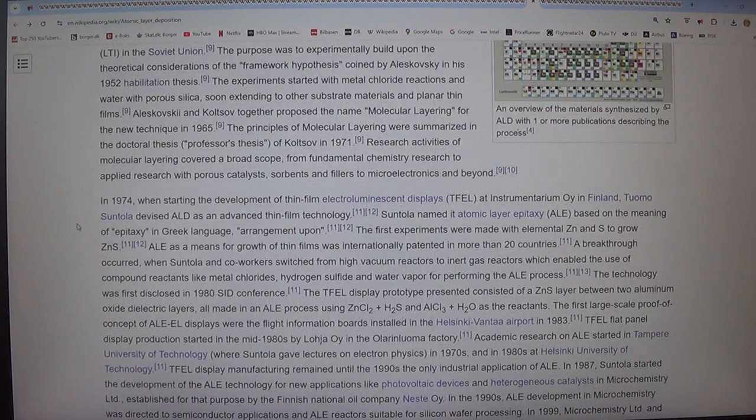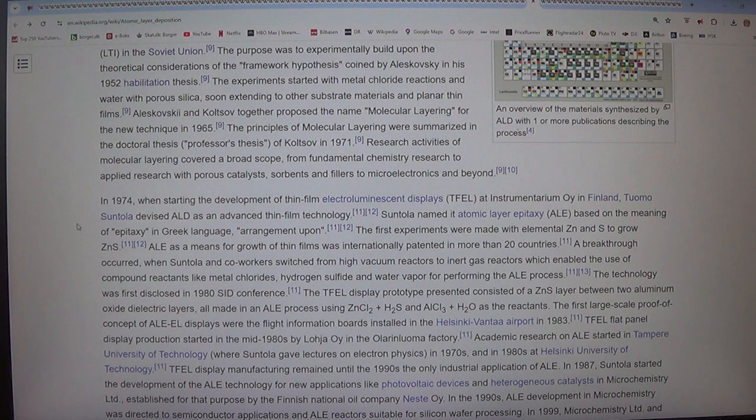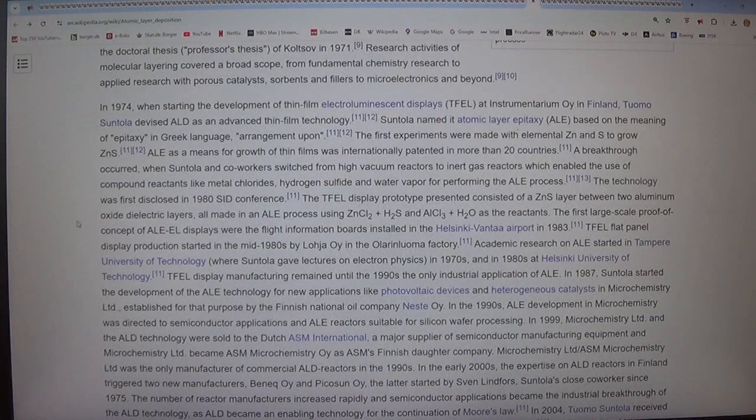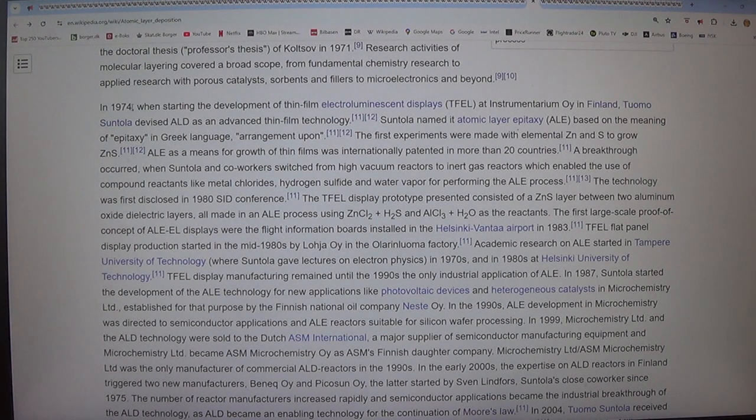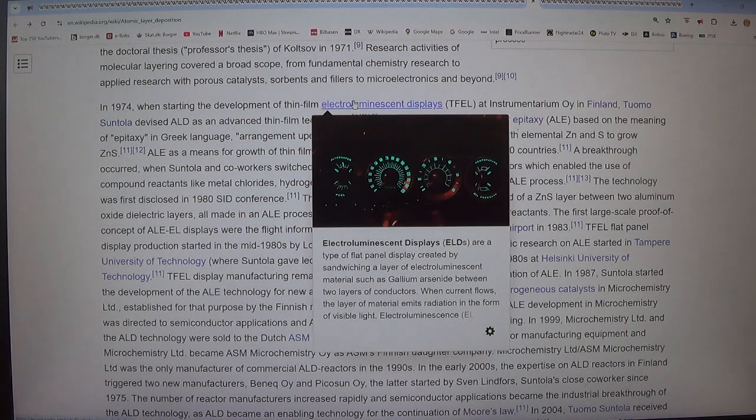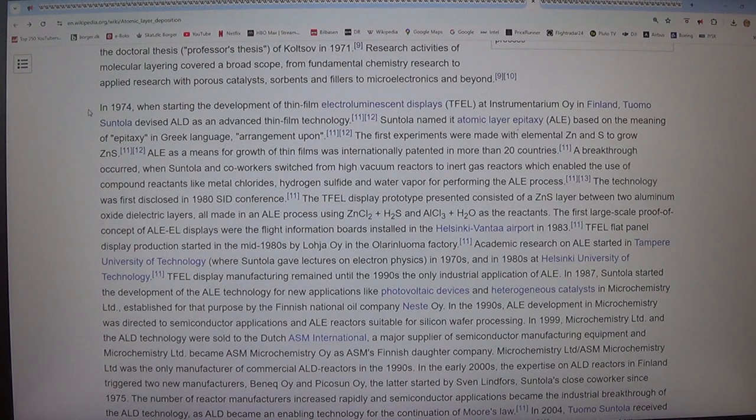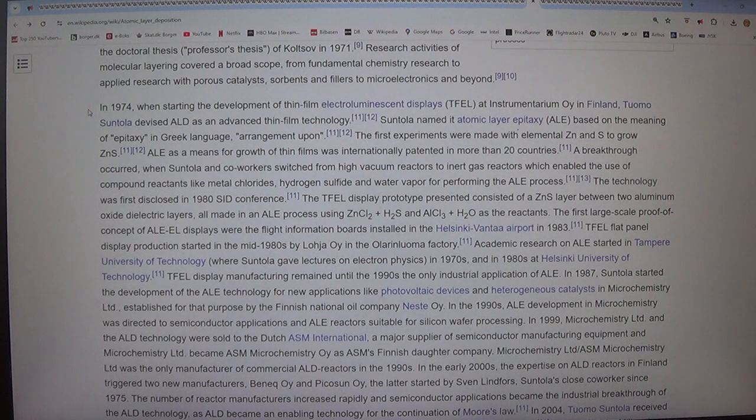Research activities of molecular layering covered a broad scope, from fundamental chemistry research to applied research with porous catalysts, sorbents and fillers to microelectronics and beyond. In 1974, when starting the development of thin film electroluminescent displays at Instrumentaria in Finland, Tuomo Suntala devised ALD as an advanced thin film technology. Suntala named it atomic layer epitaxy (ALE), based on the meaning of epitaxy in Greek language, arrangement upon. The first experiments were made with elemental ZN and S to grow ZNS. ALE as a means for growth of thin films was internationally patented in more than 20 countries. A breakthrough occurred when Suntala and co-workers switched from high vacuum reactors to inert gas reactors which enabled the use of compound reactants like metal chlorides, hydrogen sulfide and water vapor for performing the ALE process.